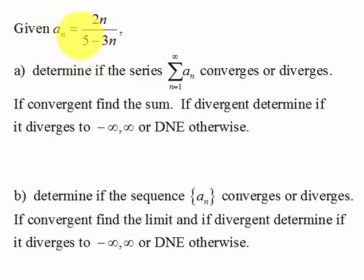Here we have a formula a_n equals 2n over 5 minus 3n. We're going to determine if we take this and put it in a series, so we sum up all of the terms.